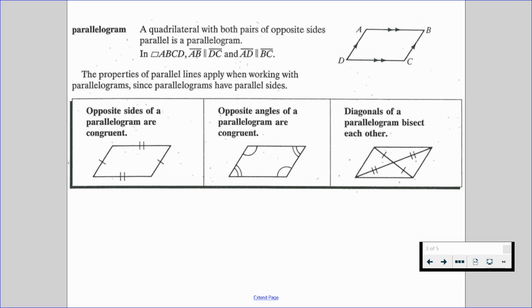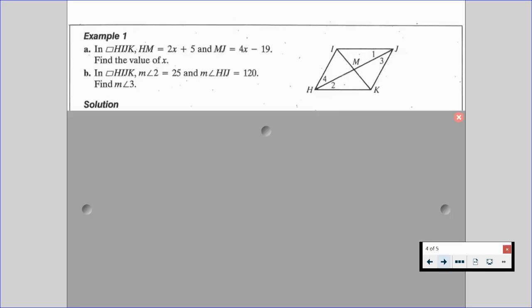Let's go through an example involving some algebra here on those topics. So in example one, problem A. In parallelogram HIJK, the length of HM is equal to 2X plus 5, and the length of MJ is equal to 4X minus 19. And we want to find the value of X.